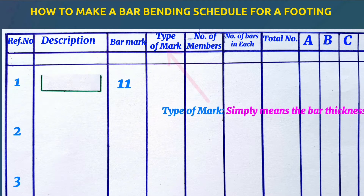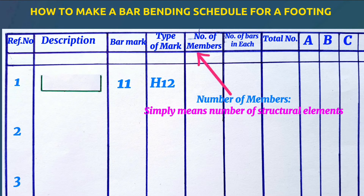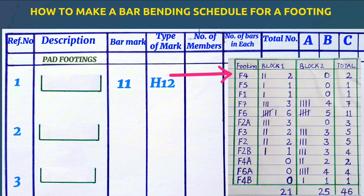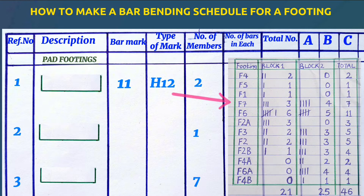Under type of mark, we simply put the bar diameter — H12, H16, H10 — depending on the bar diameter of the steel bar. Number of members simply means the number of structural elements that are similar. For example, if we have two bases or footings labeled as F4 throughout our entire structure, we put here as 2. If we have one pad footing say F5, we put here as 1. If we have 7 similar footings, we write here as 7.